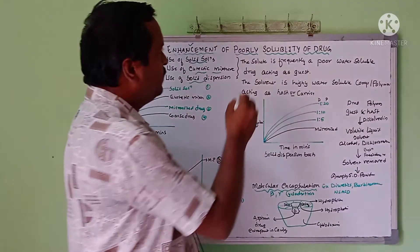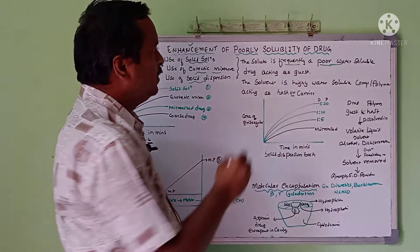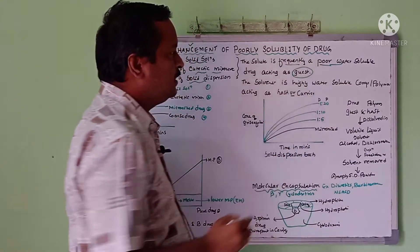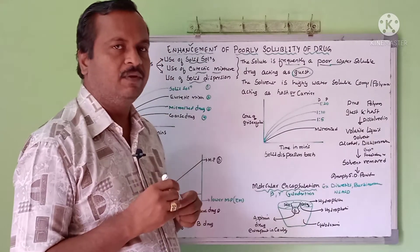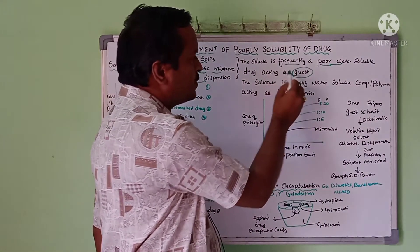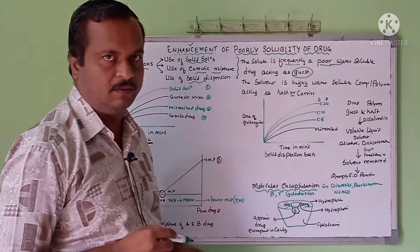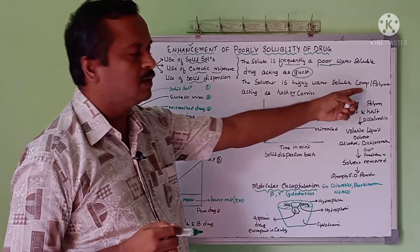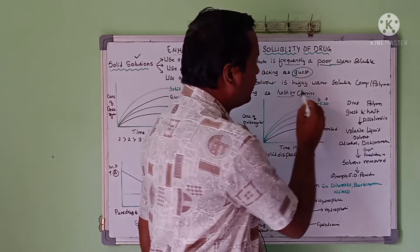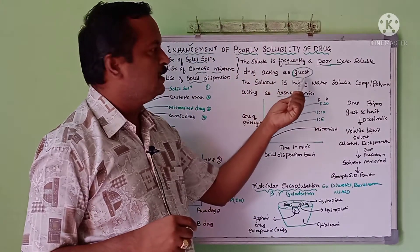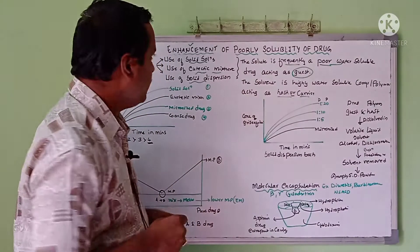The basic concept here is that the solute is frequently a poor water-soluble drug acting as a guest. Whatever drug which has poor solubility acts as a guest and is called the solute. Whereas the solvent is a highly water-soluble compound, also called a polymer, and it acts as a host or carrier. So, solute is the guest and solvent is the host or carrier.